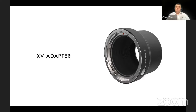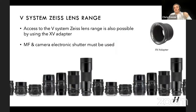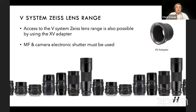There is also the XV adapter for customers who have V system cameras like a 500C and Zeiss lenses. You can attach those lenses to either camera body for manual focus and aperture, but you will need to use the electronic shutter in the camera body since the built-in leaf shutter cannot be used. This gives access to a wide range of lenses from very wide angle up to 300mm+ telephoto.